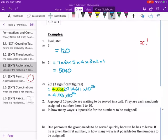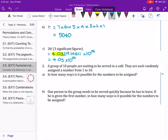For example 2, a group of 10 people are waiting to be served in a cafe. They are each randomly assigned a number from 1 to 10. What we want to calculate is in how many ways is it possible for the numbers to be assigned. Well, when we think about it, the first number could be assigned 10 ways. The second number could be assigned 9 ways and so on and so on. So this means that the total ways that it's possible for the numbers to be assigned is 10 factorial, where 10 factorial equals 3,628,800. That's a lot of ways for the numbers to be possibly assigned.